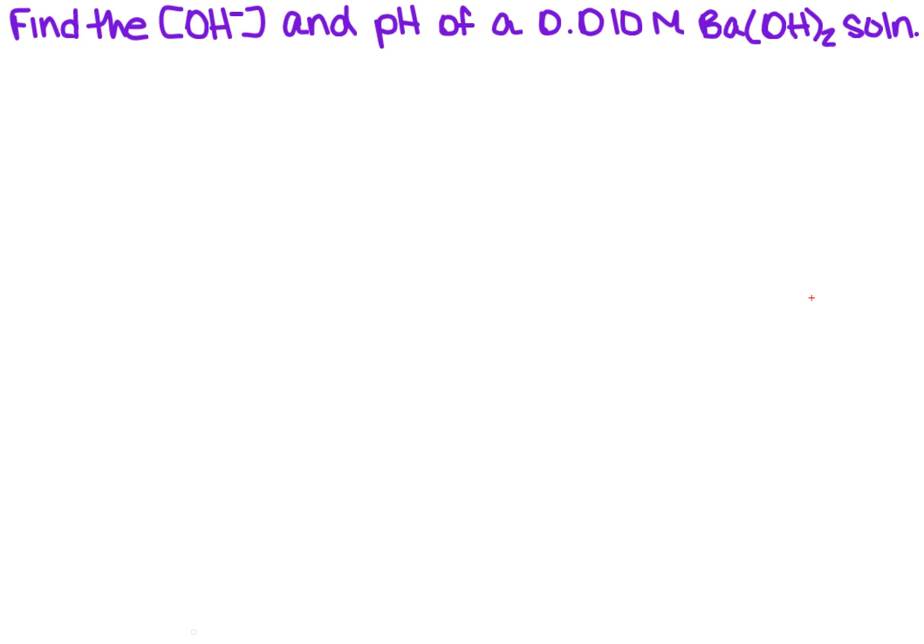We want to find the hydroxide ion concentration and pH of a 0.010 molar Ba(OH)₂ solution. So how am I going to go about doing that? Well, the first thing I need to know is how many OH ions am I dealing with.